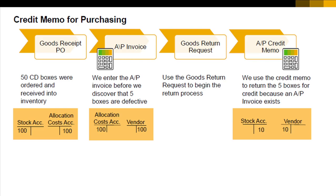For an example, if you ordered 50 CD boxes, the vendor delivered the items and the invoice. After we entered the AP invoice into SAP Business 1 but had not yet paid the vendor, you identified that 5 boxes were defective.